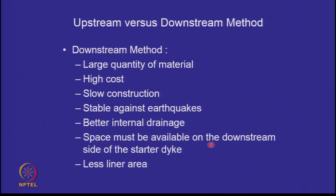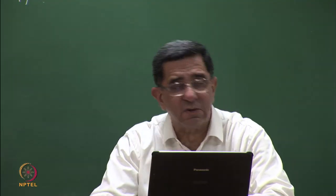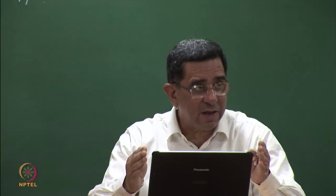However, space must be available on the downstream side of the starter dike. The downstream method also requires less liner area. New guidelines of the Ministry of Environment and Forests and new global standards are requiring liners at the bottom of slurry ponds. In the upstream method, the starter dike is at the outside, so the liner area is larger. In most ponds in India, we are using the upstream method of construction, but failures are also reported from time to time, which makes the design critical.